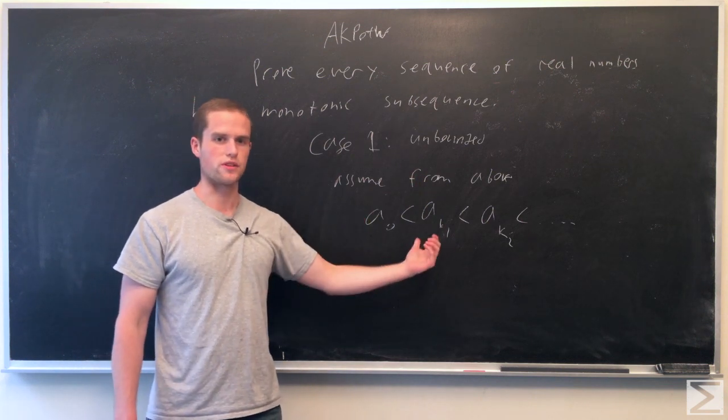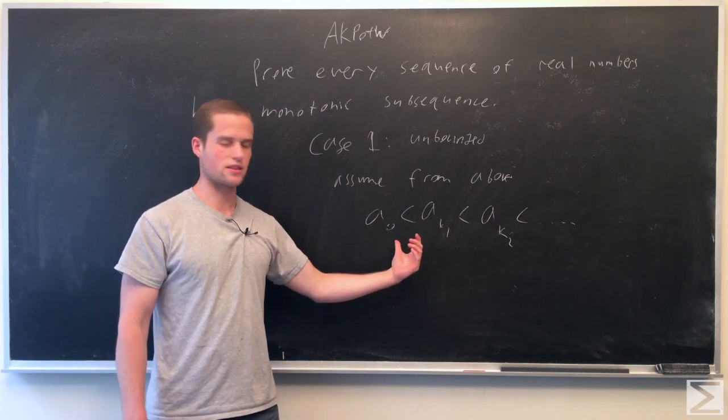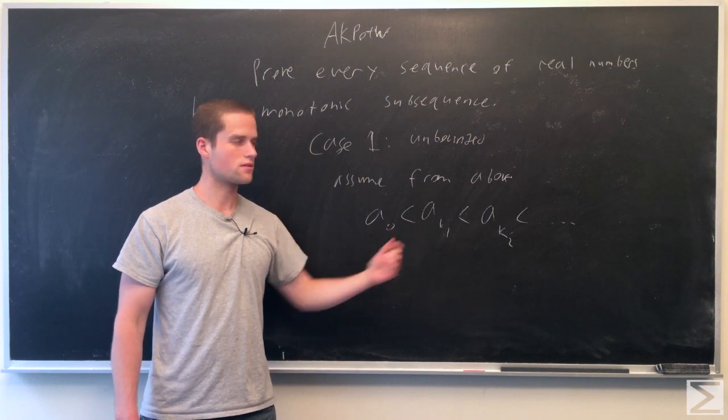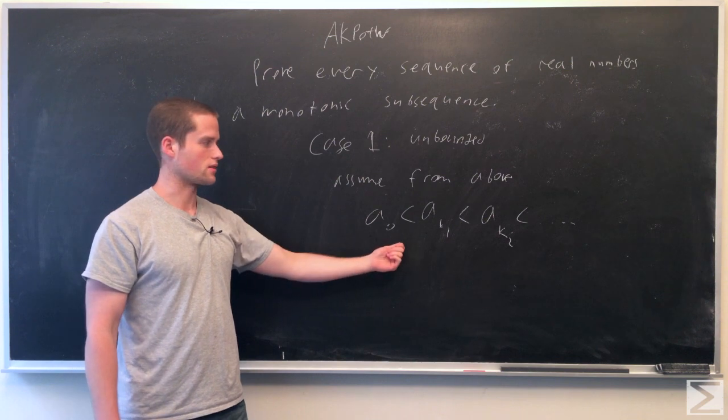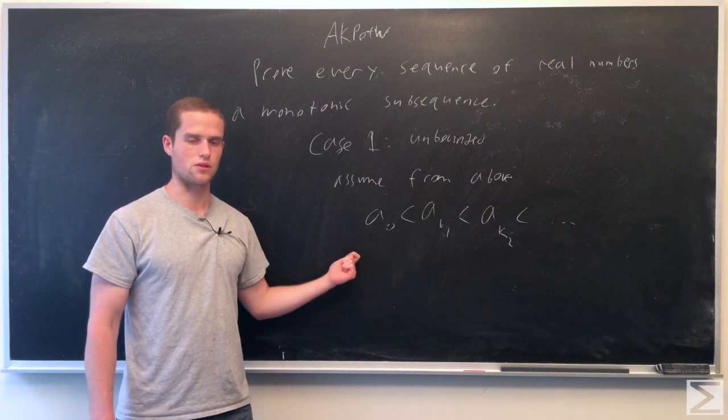In that case, we can form this increasing sequence of numbers that just keeps on increasing. Now for the case where it's unbounded from below, we can do a similar thing—we can just find a decreasing sequence of numbers.